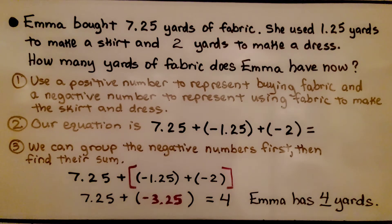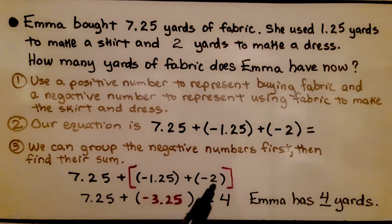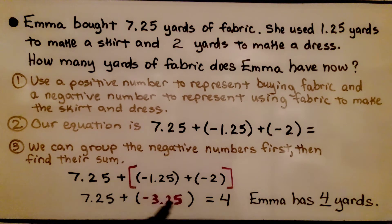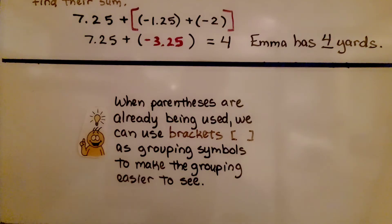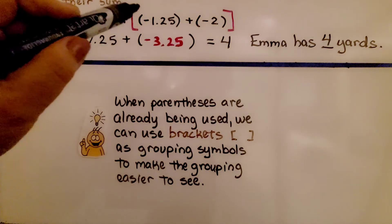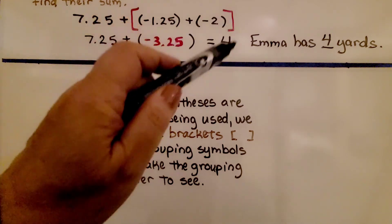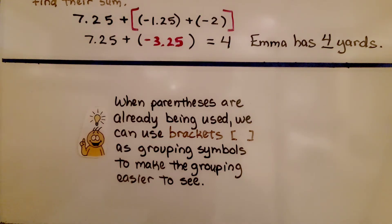Notice that there are parentheses around each negative addend, so when grouping them I used a bracket. When parentheses are already being used, we can use brackets as grouping symbols to make the grouping easier to see. We also could have put parentheses around those two addends, but brackets are easier to see.